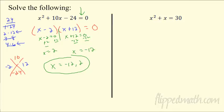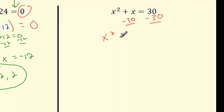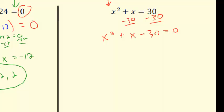I can't solve this as-is because it doesn't equal 0 — the key is it has to equal 0 to use the zero product property. So I subtract 30 from both sides. The key: always keep x² positive. I could have moved x² over, but then it would become negative — that's bad. Bring everything over to keep x² positive.